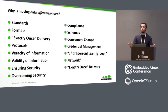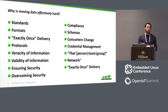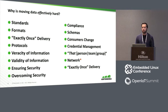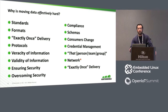We want to try and make that better for everybody. We've got compliance, schemas, and sometimes the consumers change, sometimes the producers change. You have credential management. In an organization, a lot of times it's just some other team causing all the problems. The network: spotty network, limited bandwidth, links going up and down. And exactly-once delivery — how do we make sure that data is not getting duplicated?